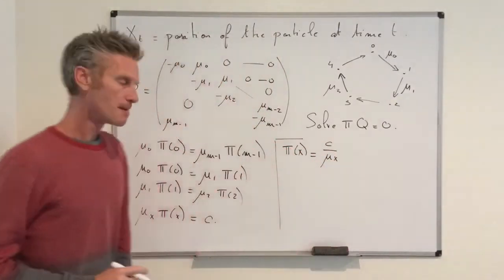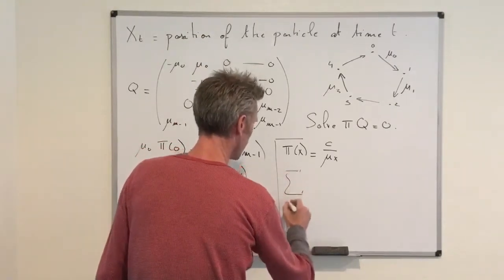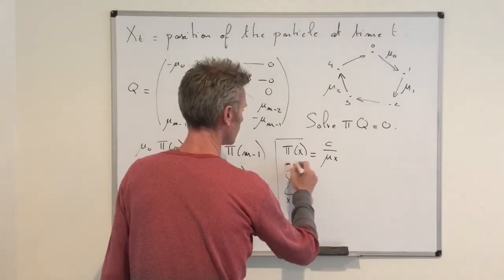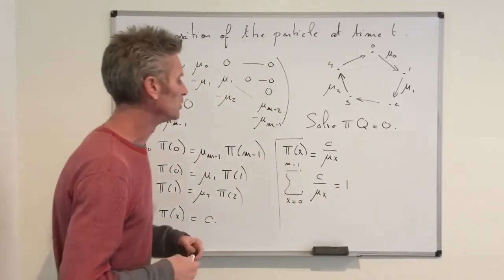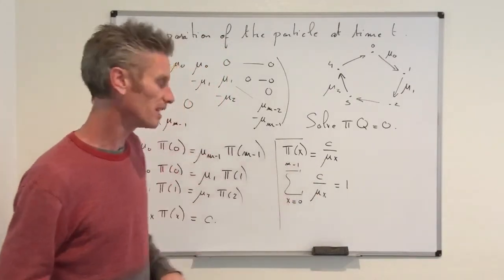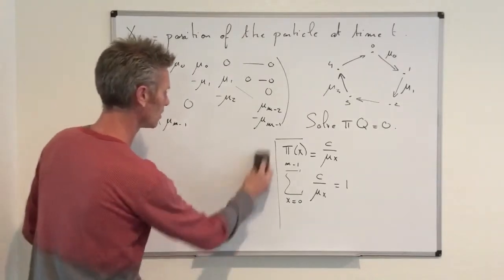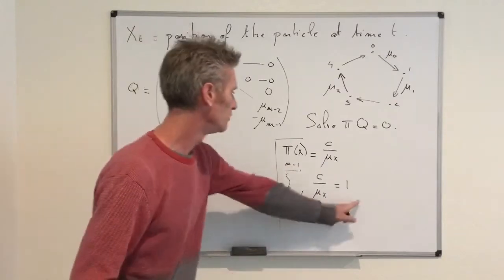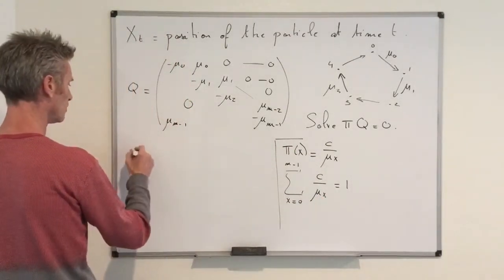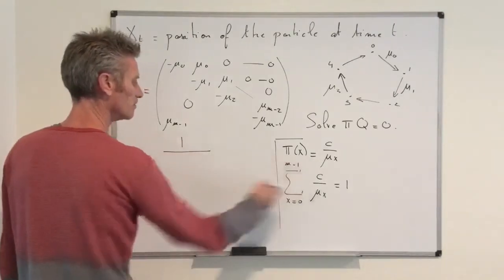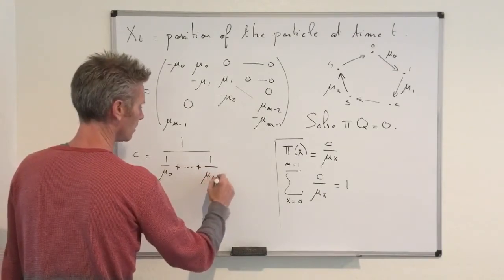Since μ_x π_x = c, we get π_x = c / μ_x. To find c, we use the normalization condition: the sum of π_x over all states from 0 to n−1 must equal 1. That is, the sum of c / μ_x = 1, which tells us 1/c = Σ(1/μ_x), so c equals 1 divided by the sum of (1/μ_0 + 1/μ_1 + … + 1/μ_{n−1}).